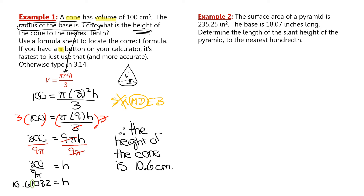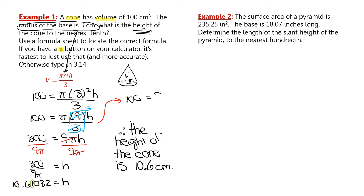I wanted to show a slightly different approach. Another way to handle this step is to collect like terms earlier — since everything is being multiplied or divided with no plus or minus signs, I can take nine over three and simplify to three. So I could have had 100 = π × 3 × H, then divided both sides by 3π in the next step and arrived at the same answer. There's some flexibility in the order, but the result is the same.